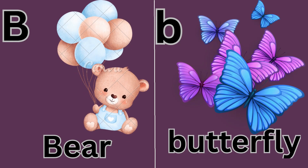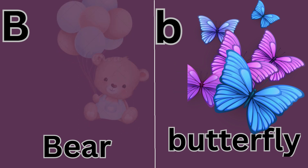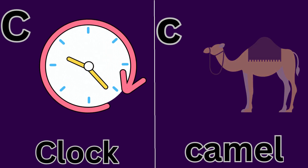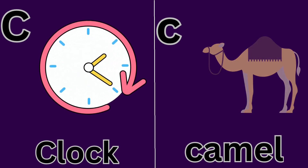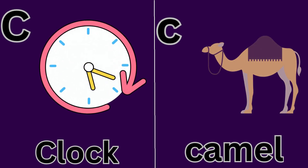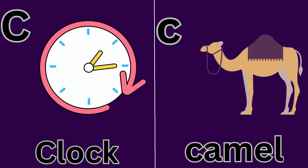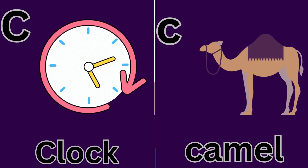B for Beer. P for Butterfly. C for Clock. C for Camel.